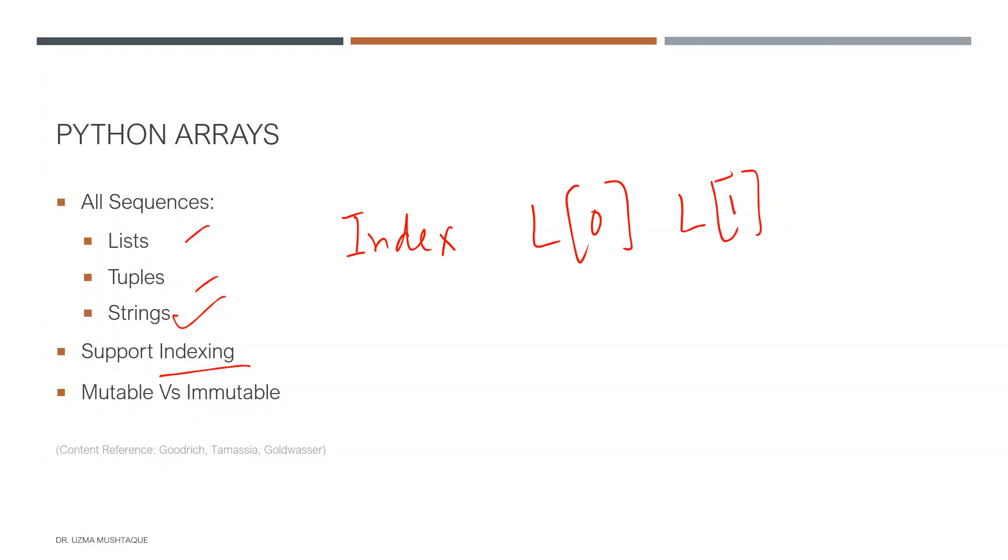They all support indexing, and there's a slight difference in that lists are mutable. I can do L[0] = 10, however I cannot do T[0] = 10 for a tuple represented by T. That's the major difference, and these are three object types that support arrays or sequences.